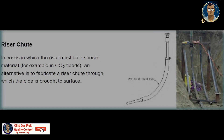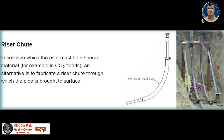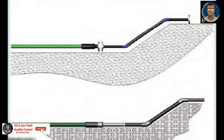Metallic CS risers are at both ends of the RTP pipeline in most cases. In some cases a chute is used to make the non-metallic pipe connect with the above-ground pipeline, but in our case it was a metallic CS riser. Remember these act as a metallic pipeline, so you need to protect those lines with cathodic protection.